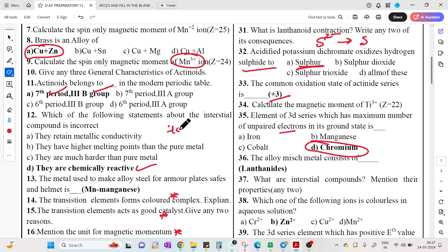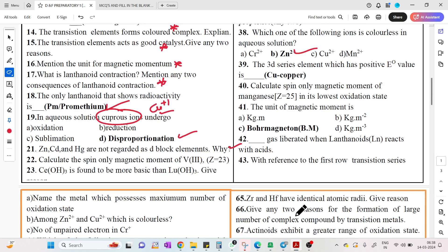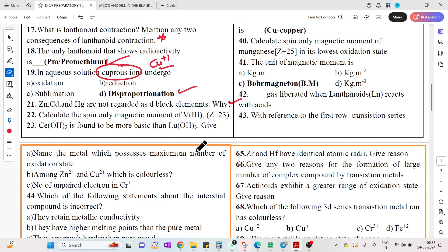HOTS questions - higher order thinking questions in MCQs. These concepts are difficult but you need to know what they're asking. Colorless in aqueous solution: zinc 2+ because there are no unpaired electrons. The unit of magnetic moment is Bohr magneton. Hydrogen gas is liberated.